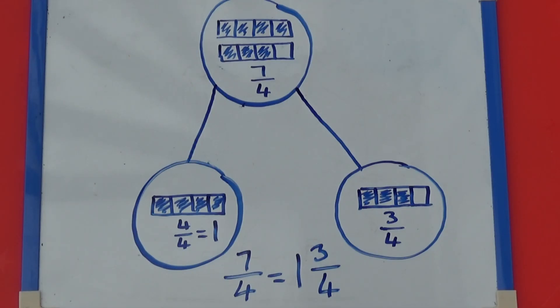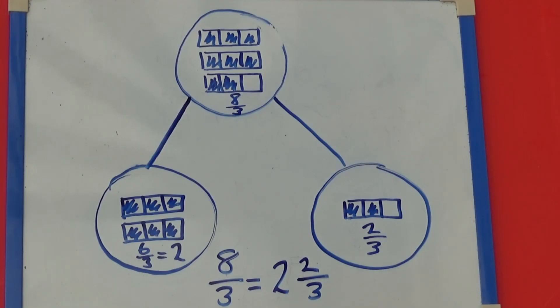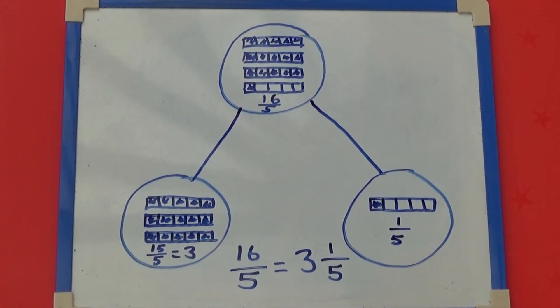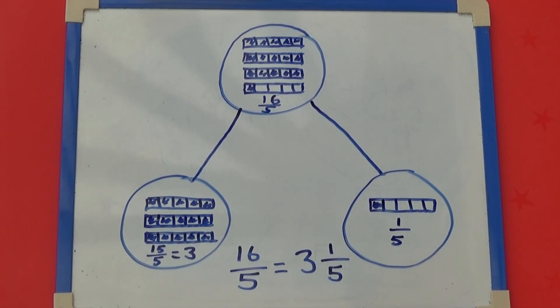7 quarters equals 1 whole and 3 quarters. 8 thirds equals 2 wholes and 2 thirds. 16 fifths equals 3 wholes and 1 fifth.